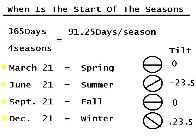The seasons are actually defined by the tilt of the earth. When we're tilted farthest from the solar plane, that's December 21st in the northern hemisphere — we're tilted 23.5 degrees from the solar plane, that is, the equator is tilted that much.